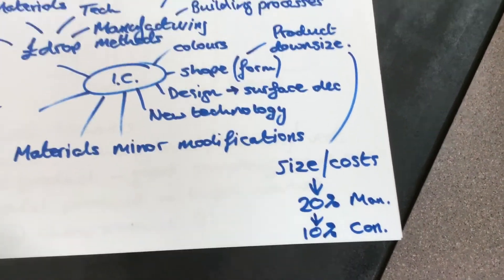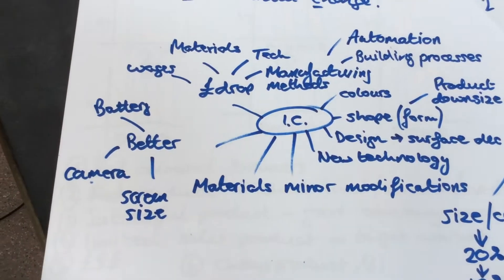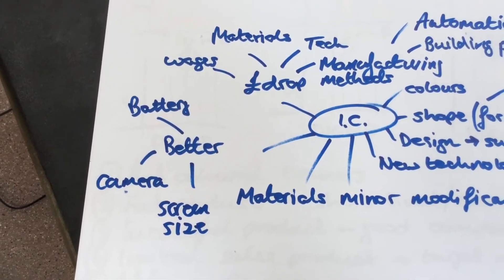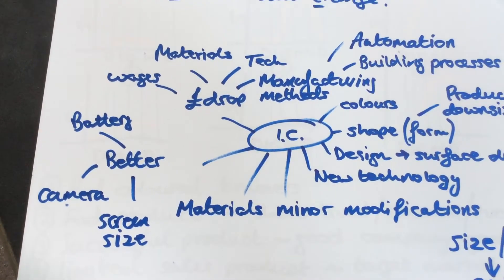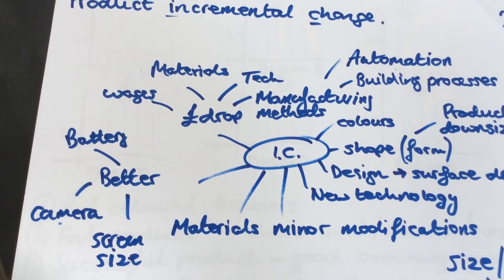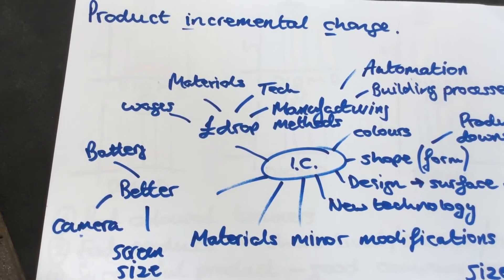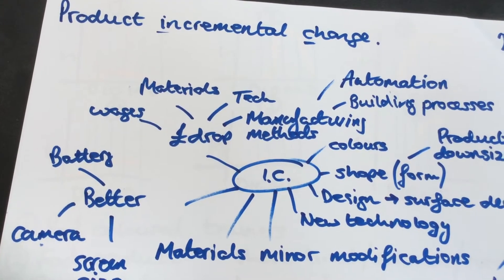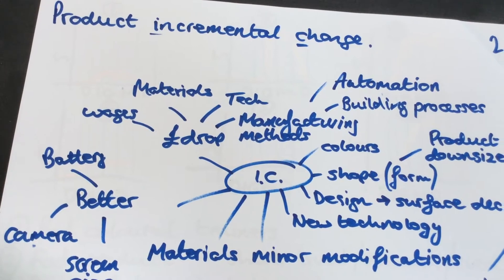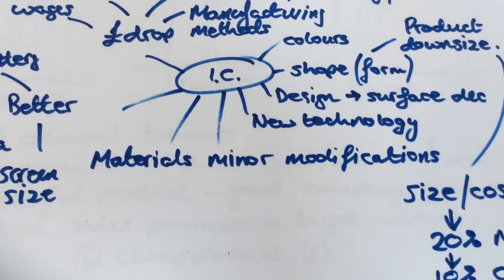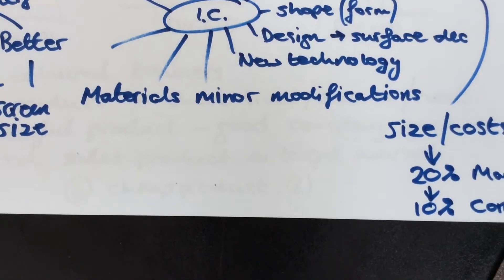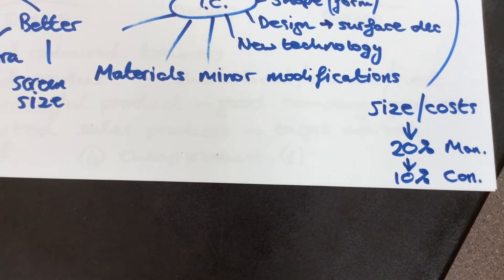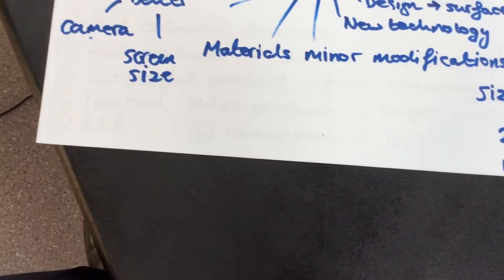We'll talk about the advantages and the disadvantages to the manufacturer a little bit later. First of all, let's have a look at the reasons why a manufacturer would do this. Well, maybe they would want to use different materials, maybe they would want to reduce their wages. All of those things would drop the price of the product to them. If it is a change of materials, they will be minor modifications. We're not talking about major changes here, just very minor product changes.